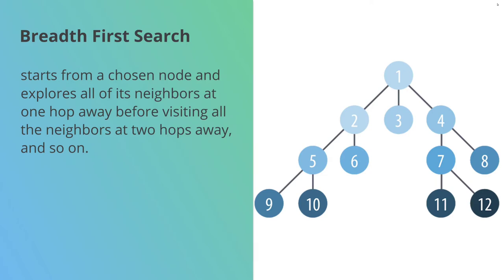Breadth first search starts from a particular node, usually specified, and explores all of its neighbors at one hop away. Then it comes back and explores those two hops away, and so on until it's covered as much of the graph as it can reach. You can see on this diagram on the right hand side, it numbers the order in which these nodes are visited. We start at number one, visit everything one hop away, then the things two hops away, and finally finish with the things three hops away.